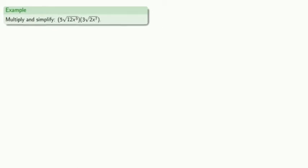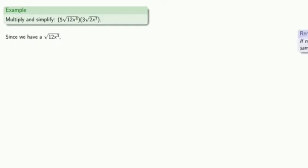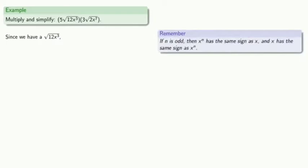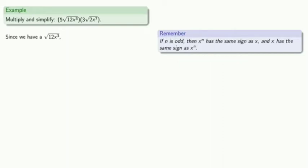How about something more complicated? Since we have a square root of 12x cubed, the radicand 12x cubed must be non-negative. Remember, if n is odd, then x to the power n has the same sign as x, and x has the same sign as x to the n. Since we need 12x cubed to be non-negative, this means that x must be non-negative, and so we can simplify.